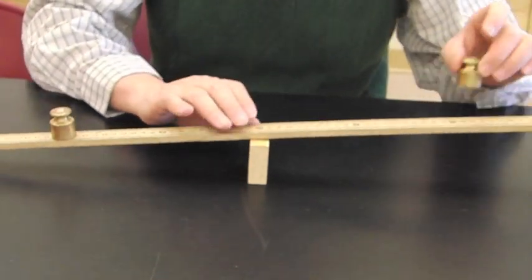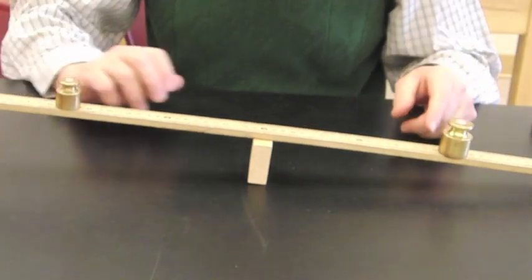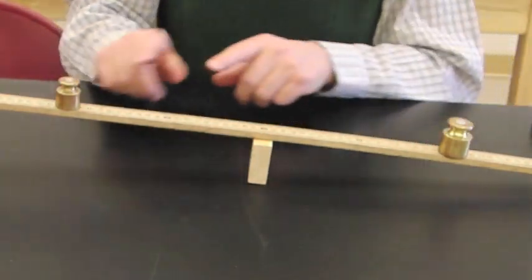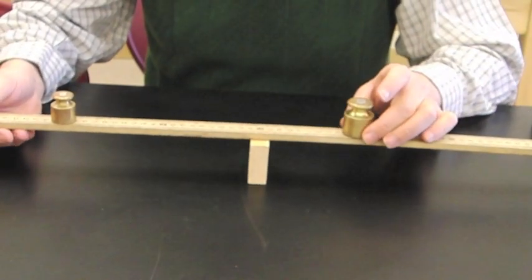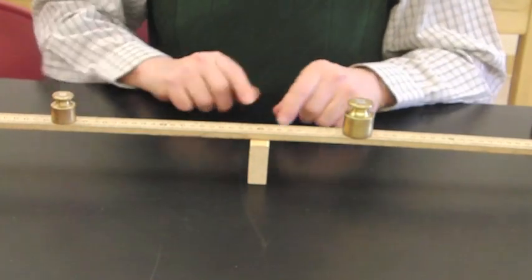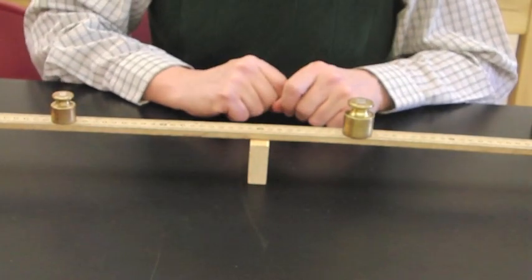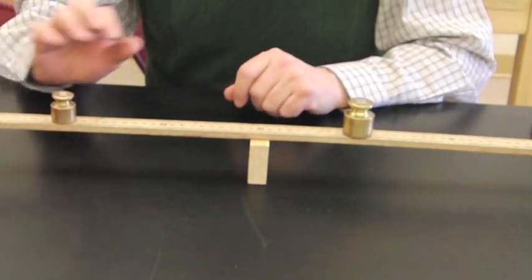Now if we replace this weight with a heavier one, we would expect it to become unbalanced because the torque on this side is greater than the torque on this side. So if I move this piece closer, the weight of this is twice as much as this, so the distance is half as much. So this distance times this weight is going to be equal to this distance times this weight.